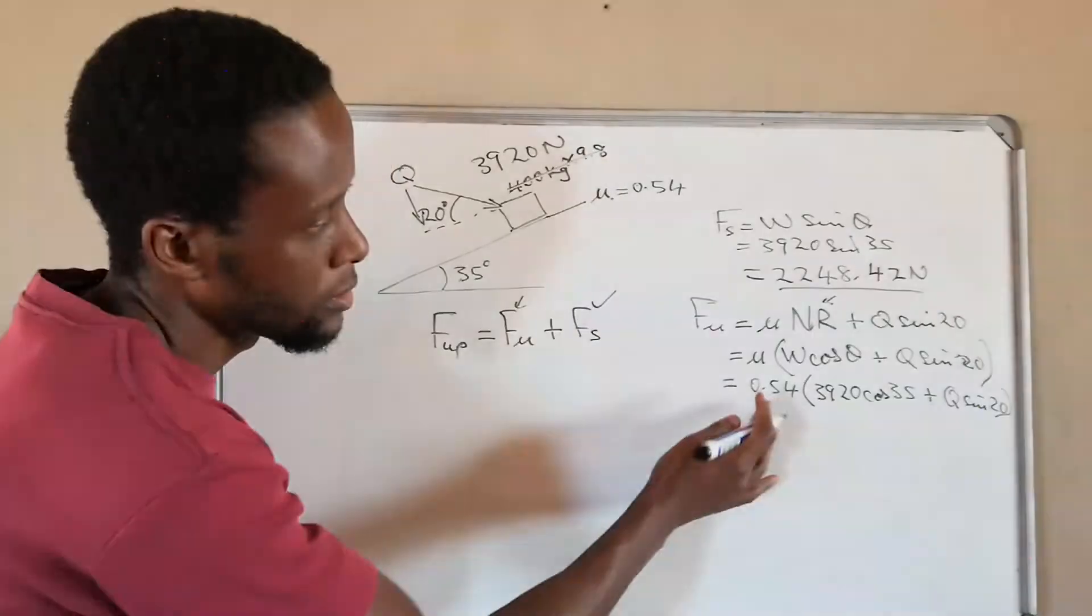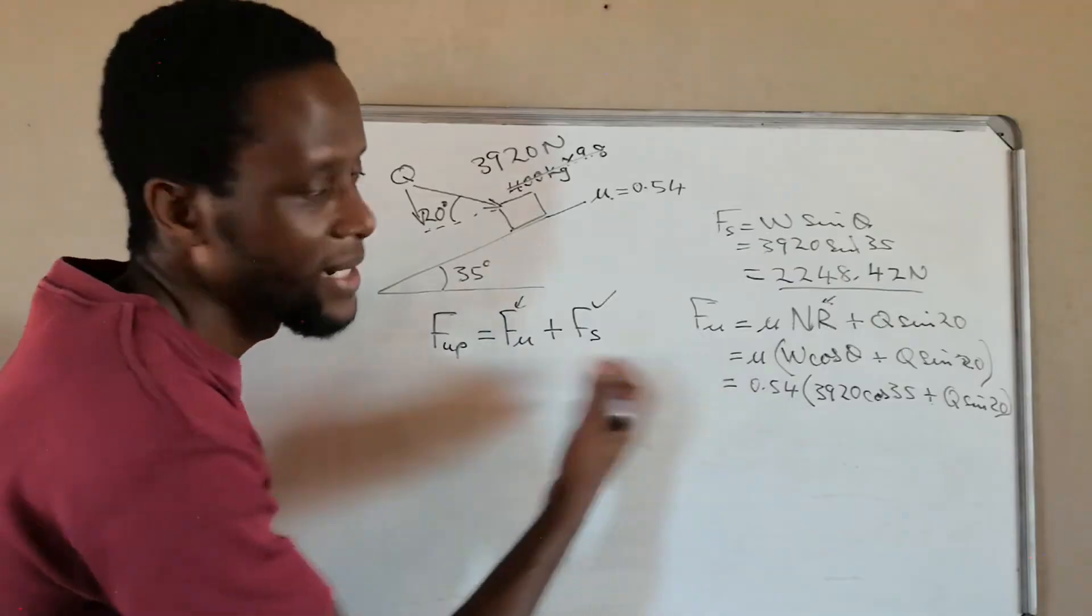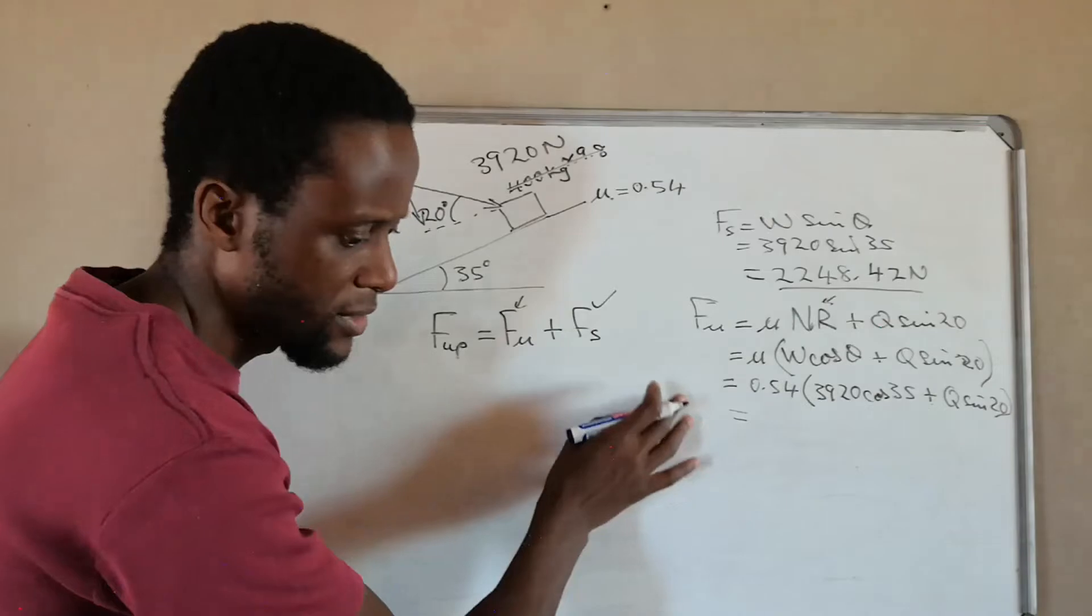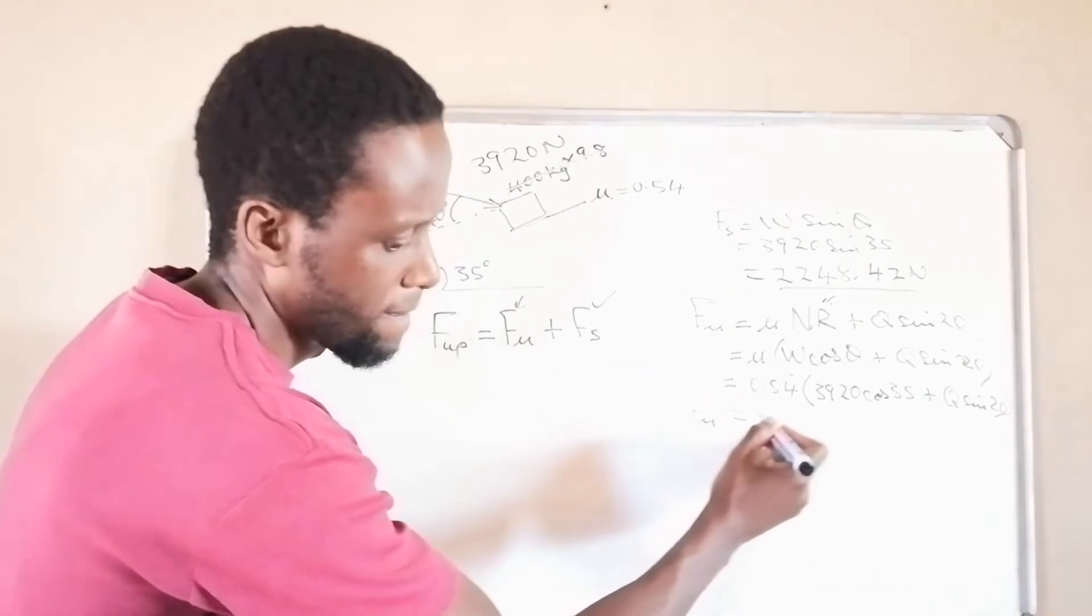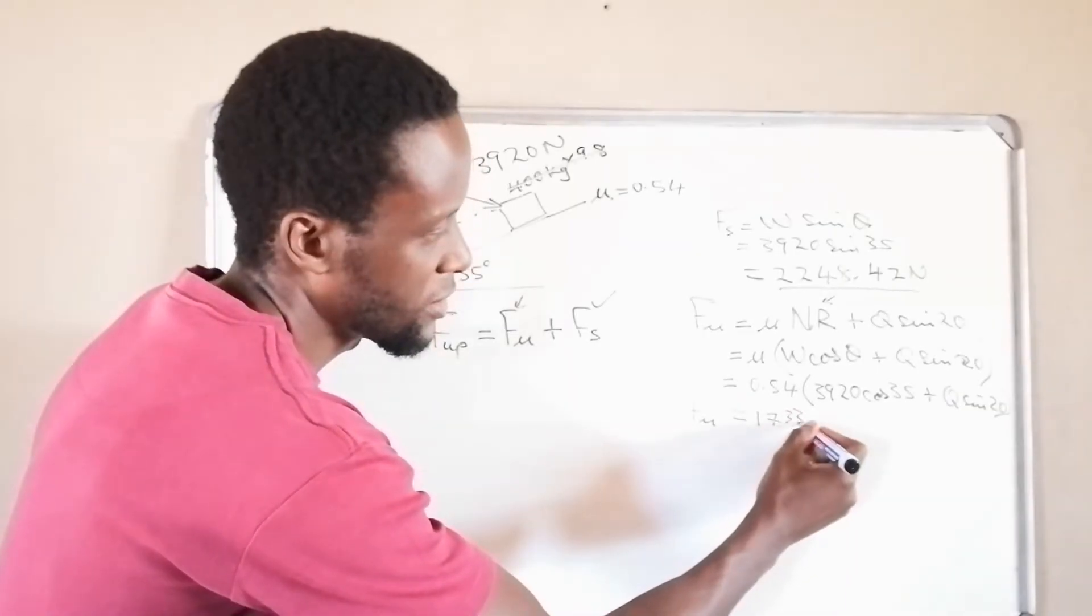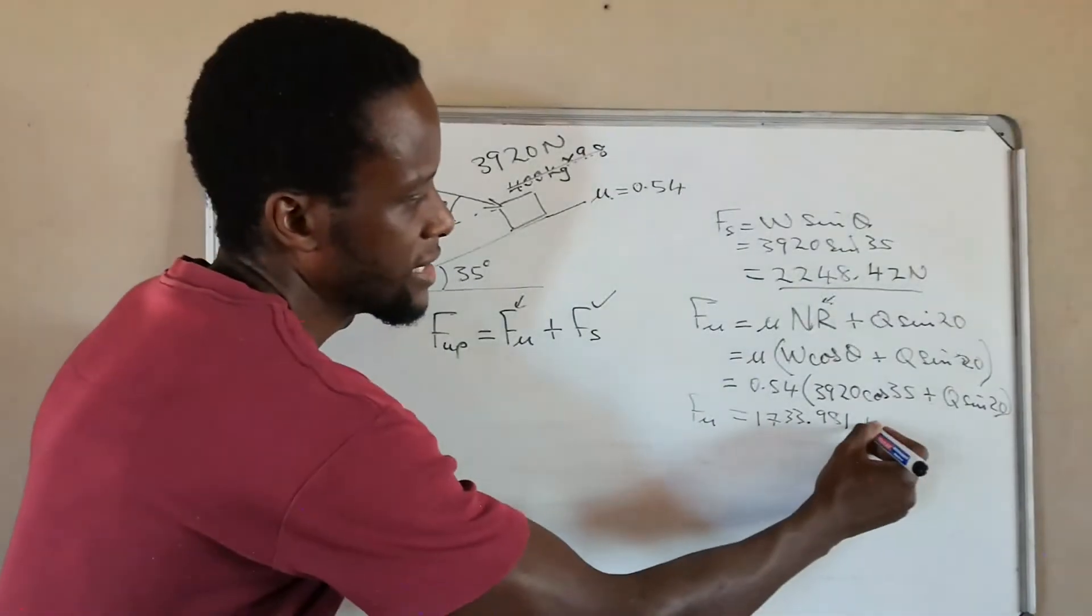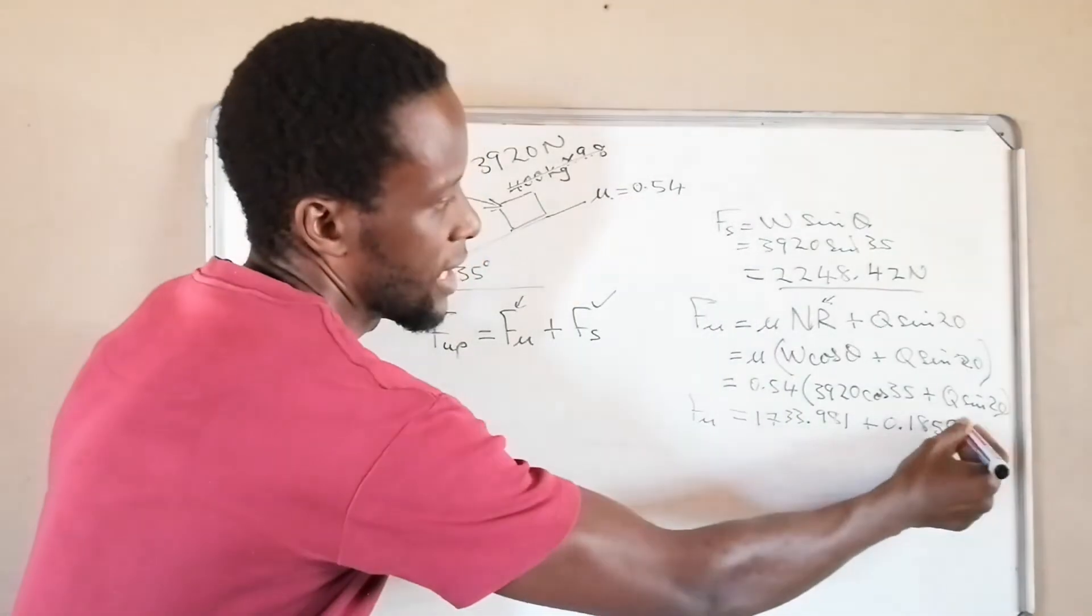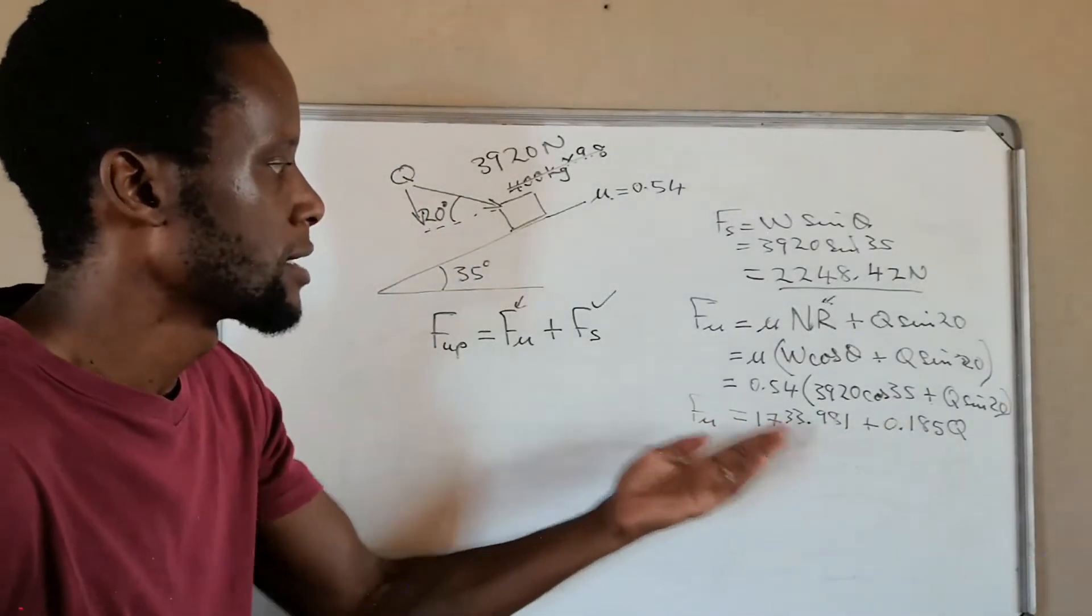So we simplify this before we can throw it there. Or if you want you can take all of this, you throw it in there, but I advise that you simplify it separately before we can jump to this. So what we have is this will take us if we calculate this, will take us to 1733.981, which we got in the previous, then we are adding because this 0.54 times that q, it gives us 0.185 and the q still remains. So what we just need is this, we can solve for it. So we need this and we'll place it in there.